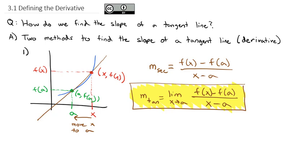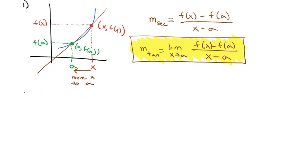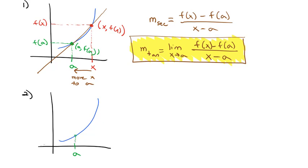There is a second way that's used quite often — in fact, we'll probably use it more overall in the course. Again, we make a little graph with some curve. We have some point a, which goes up to f(a). But instead of going over to some random x, we increase what we call h, so we end up with a point at a plus h. And so what we actually end up with is f(a plus h).